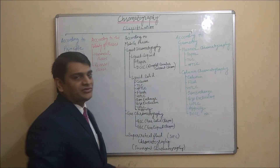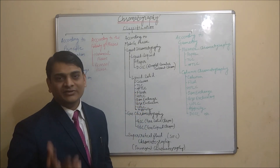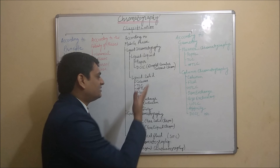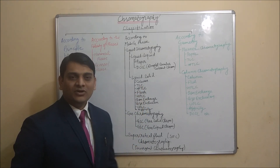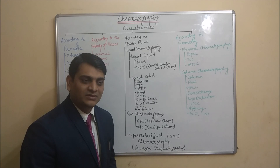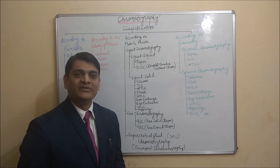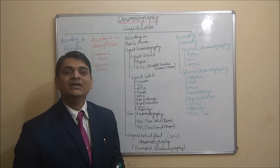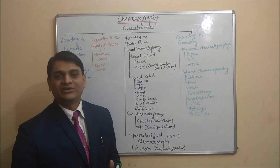In liquid-solid chromatography, most chromatography techniques fall under this category — liquid mobile phase and solid stationary phase. The first type is column chromatography. A column is a hollow tube filled with stationary phase, through which the mobile phase runs. The sample runs through the column due to affinity with either mobile phase or stationary phase and separation takes place.